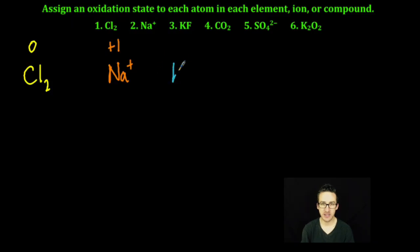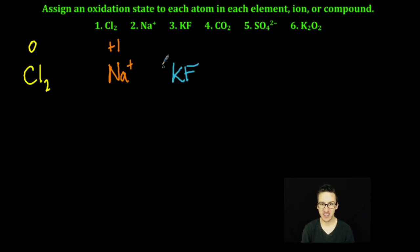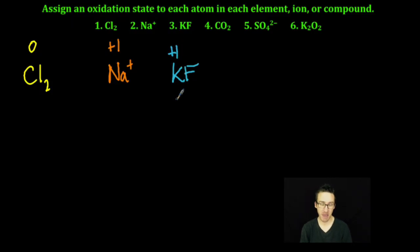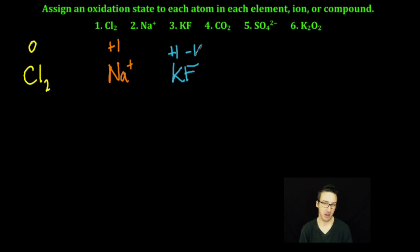Number three, watch out — it's a compound: potassium fluoride. Follow the rules. I'm going to assign a positive one oxidation number to potassium first because it's an alkali metal. Then I'm going to assign a negative one to my fluoride ion here. Pretty straightforward ionic compound.